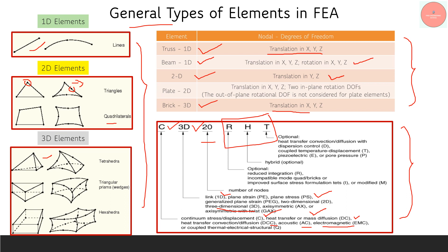The remaining three characters in the notation are optional, depending on your type of analysis. 'R' stands for reduced integration, used for incompatible modes like quads and bricks or improved surface stress formulations. 'H' stands for hybrid type element — optional, you can use or neglect it. 'T' is also optional and is used for heat transfer convection, pressure calculations, or piezoelectric studies. These three are optional based on your type of simulation.